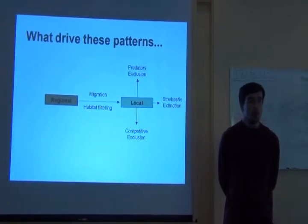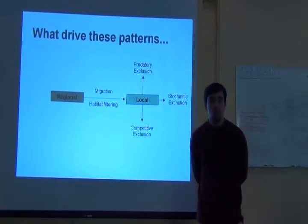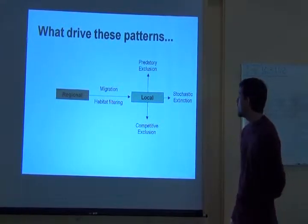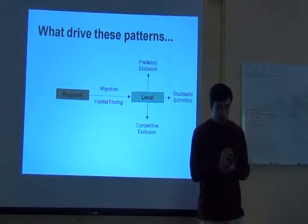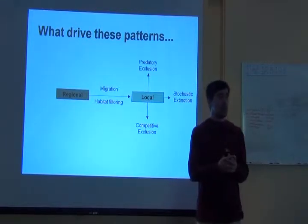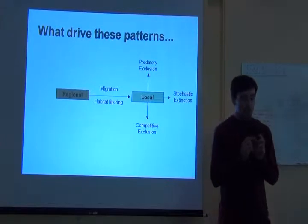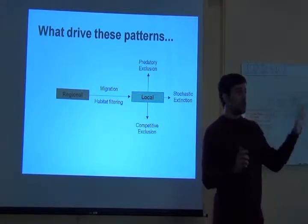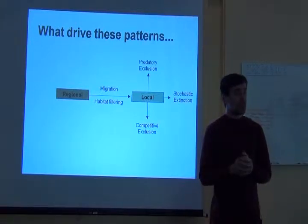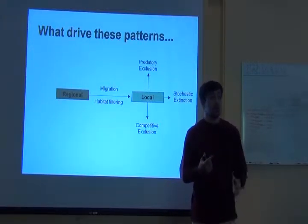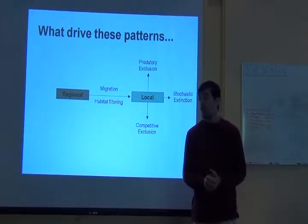So now we ask a not simple question: what are the drivers of these patterns? What are the causes and how are they maintained? In this conceptual map, we have to separate processes that happen at the local scale — these affect what species you find in a single site — and a different group of causes that affect species living in a given region or continent, at a much larger scale.